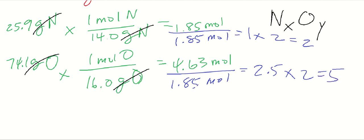Our final answer is going to be N2O5 - dinitrogen pentoxide. You can't reduce that, so that's our empirical formula.